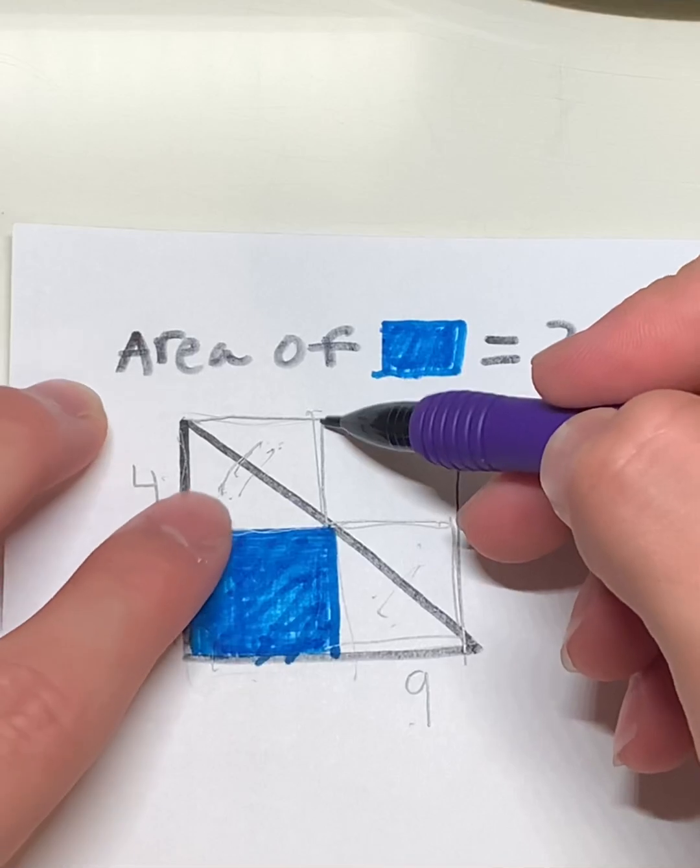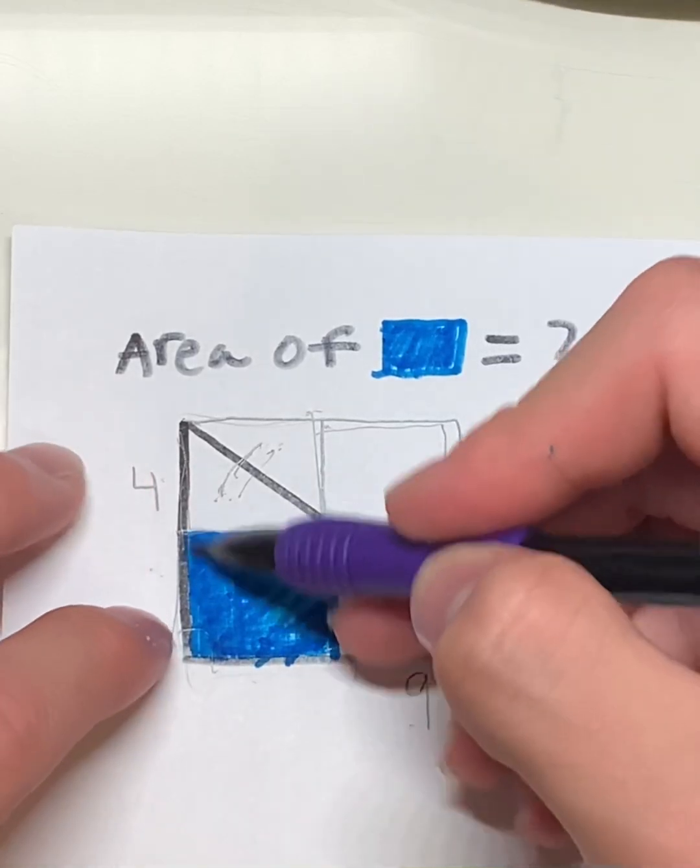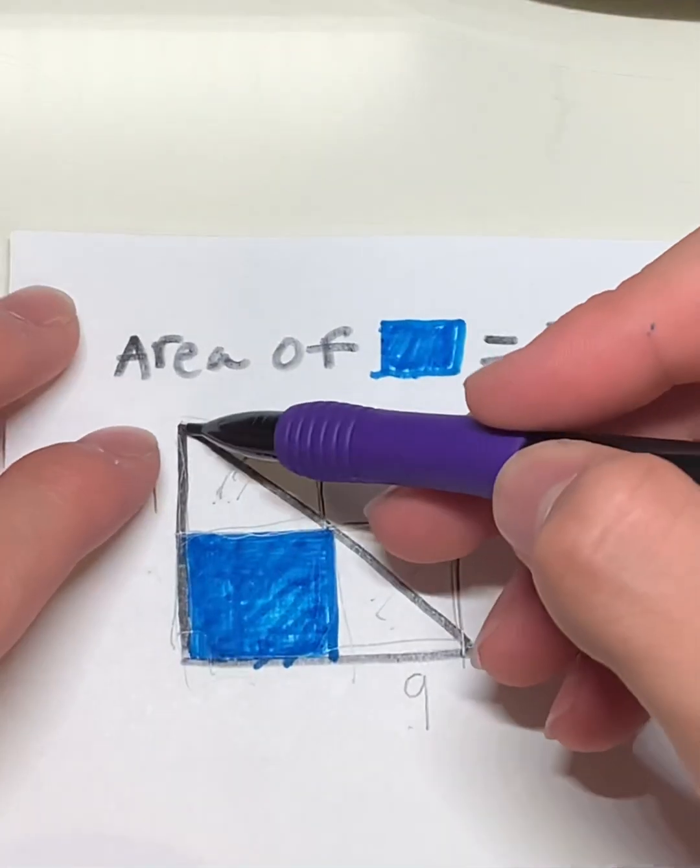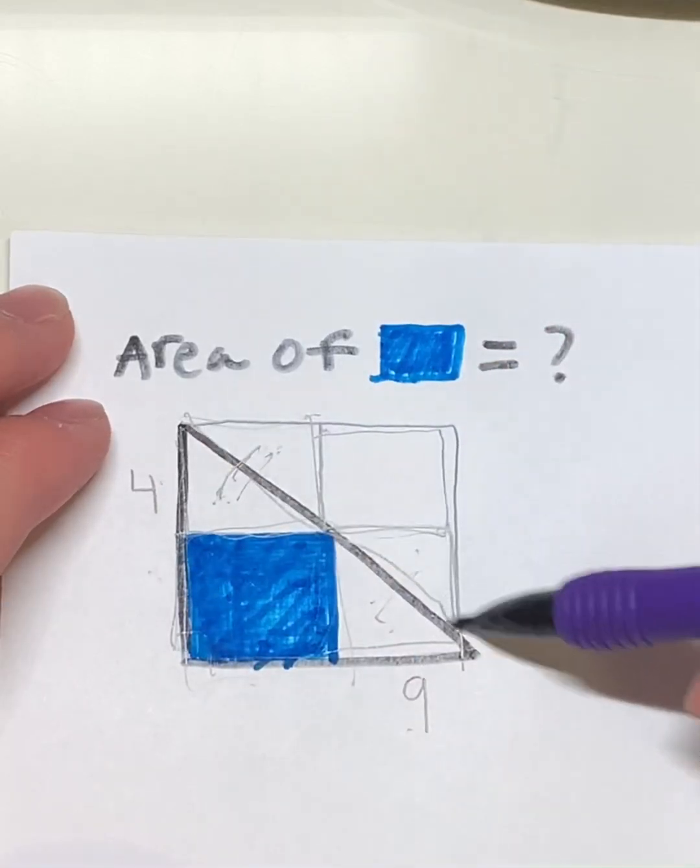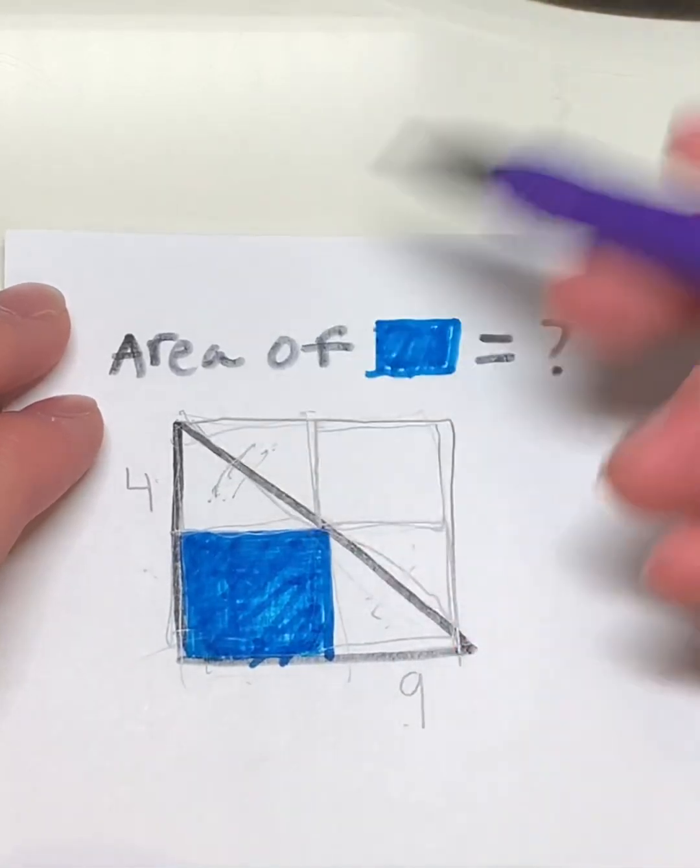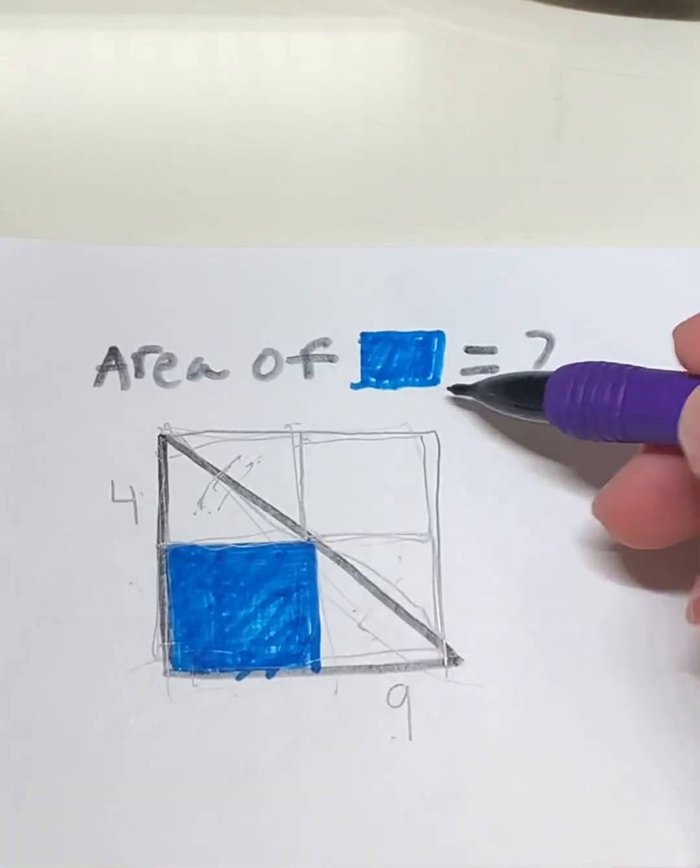Therefore, it means that this box right here has to be equal to this box. Why? Because, as we can say, this triangle right here is the same as this triangle right here. Because we form the rectangle and this line divides the triangles into two.